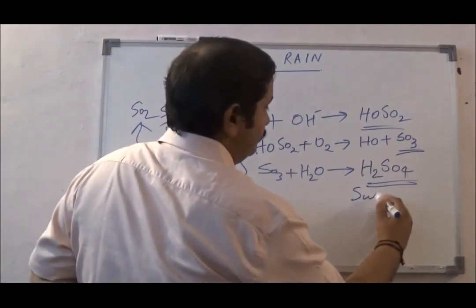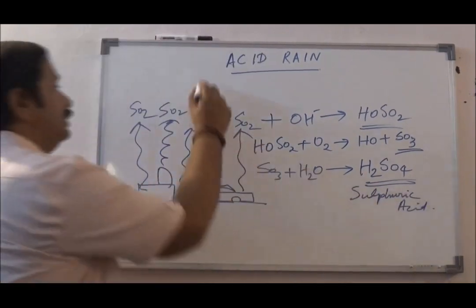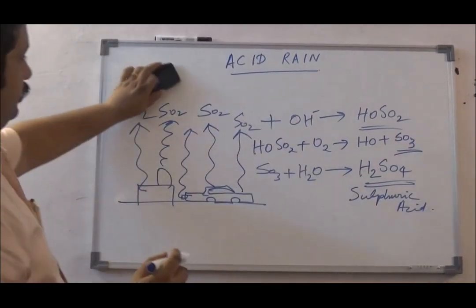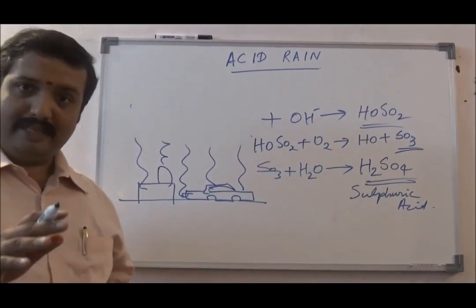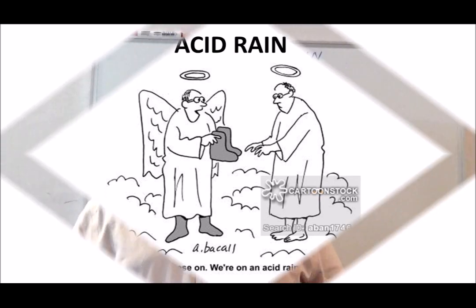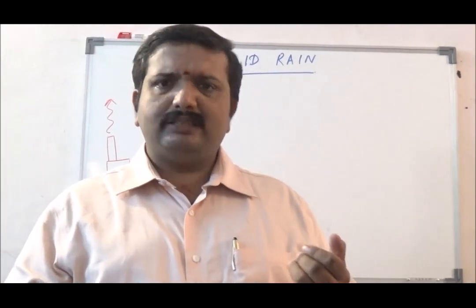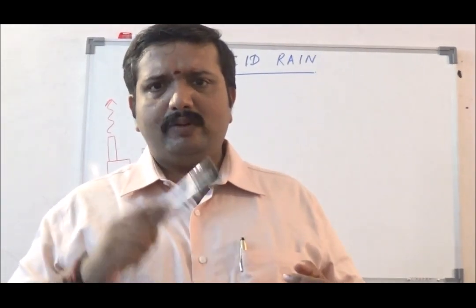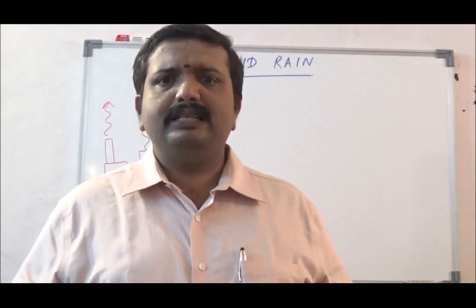This mixes and forms H2SO4, which is sulphuric acid. This acid comes down as rainfall into the ground. Sulphur dioxide, when released by automobiles or industries, goes up into the atmosphere and comes back down with rainfall after reaction as sulphuric acid.